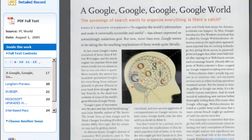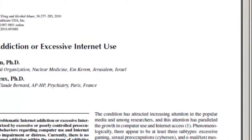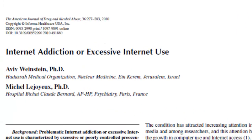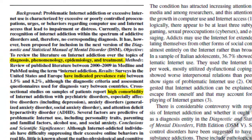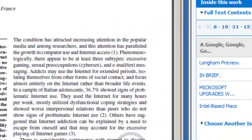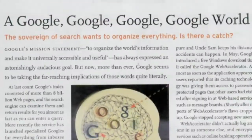Authors of scholarly articles typically use technical scholarly language that is specific to their field. Writers of magazine and newspaper articles tend to use general language that can be understood by the average reader.